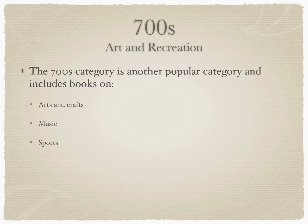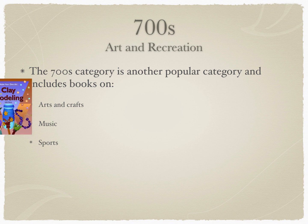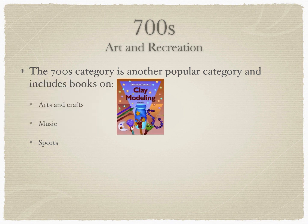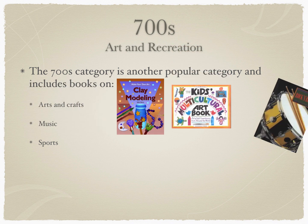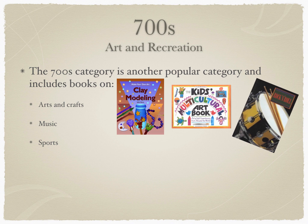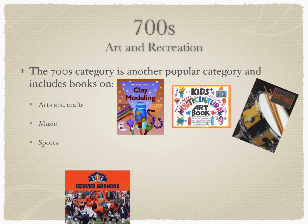Seven Hundreds: Art and Recreation. The Seven Hundreds category is another popular category and includes books on Arts and Crafts, Music, and Sports.